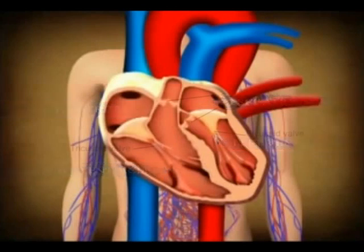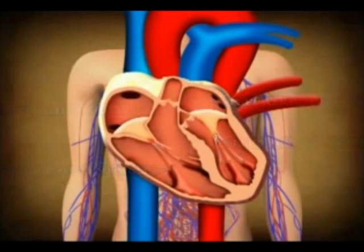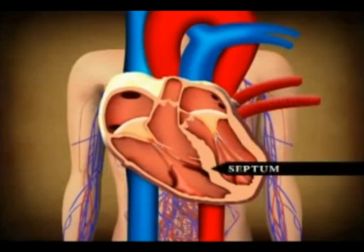The valve between the right auricle and right ventricle is the tricuspid valve, which has three flaps. The valve between the left auricle and ventricle is the bicuspid valve, which has two flaps. The semilunar valves at the base of the aorta and pulmonary artery prevent backflow of blood into the left and right ventricles respectively when they relax. The left and right sides of the heart are separated by a thick muscular wall called the septum. The left ventricle has thicker muscles than the right, as it pumps blood to all parts of the body, while the right ventricle pumps blood only to the lungs.